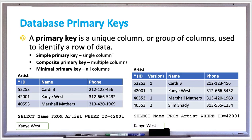If just one column is used as the primary key, that's called a simple primary key. And sometimes multiple columns, called a composite primary key, are necessary to uniquely identify a row. Composite primary keys are surrounded with parentheses, and a minimal primary key uses all the columns for uniqueness.